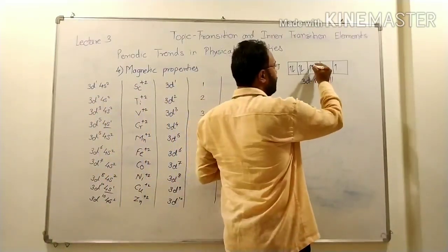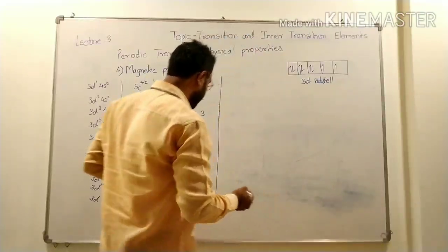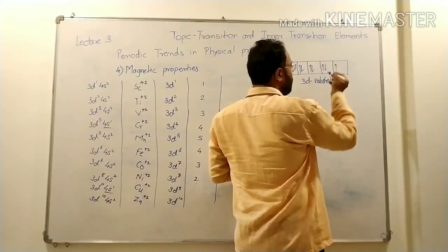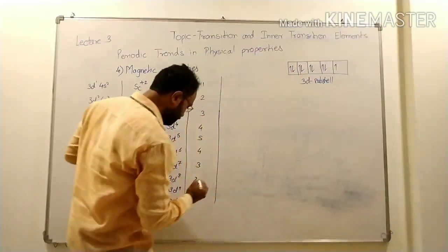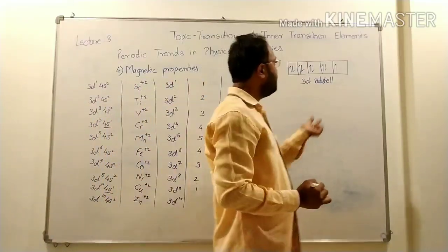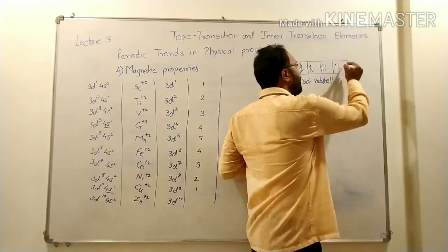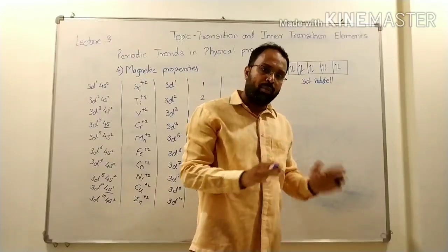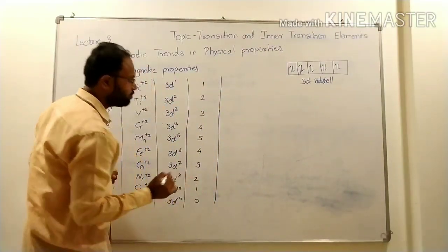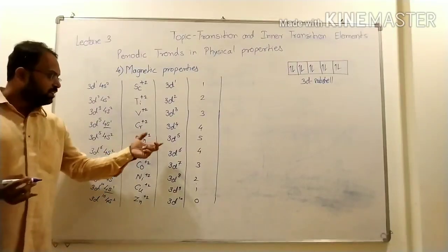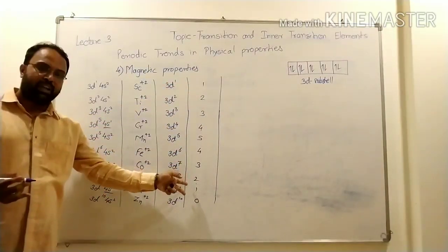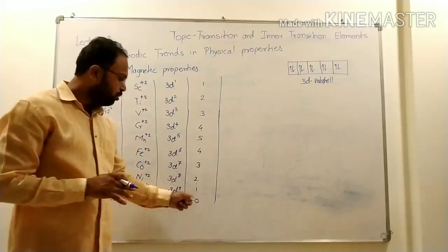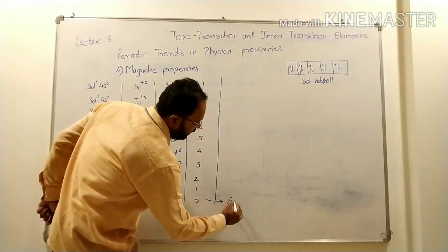For 3D8 (nickel), the eighth electron is paired in the third orbital, so unpaired electrons are two. For 3D9 (copper), one electron is paired in the fourth orbital, so unpaired electrons are one. For 3D10 (zinc), the tenth electron is paired in the fifth orbital — now all electrons are paired, there are no unpaired electrons, so unpaired electron count is zero. Where unpaired electrons are present, substances are paramagnetic; where unpaired electrons are zero, the substance is diamagnetic.